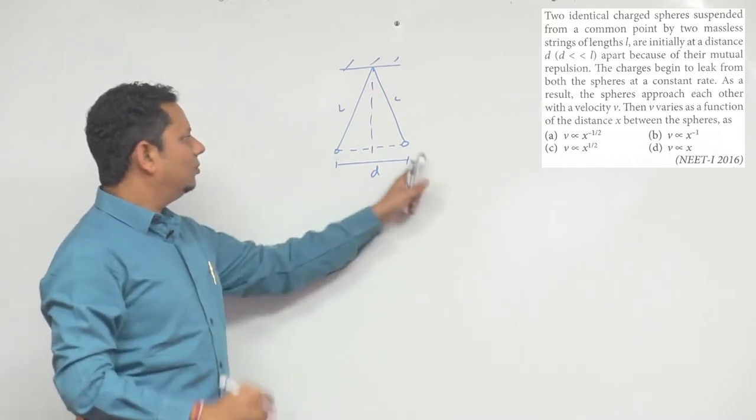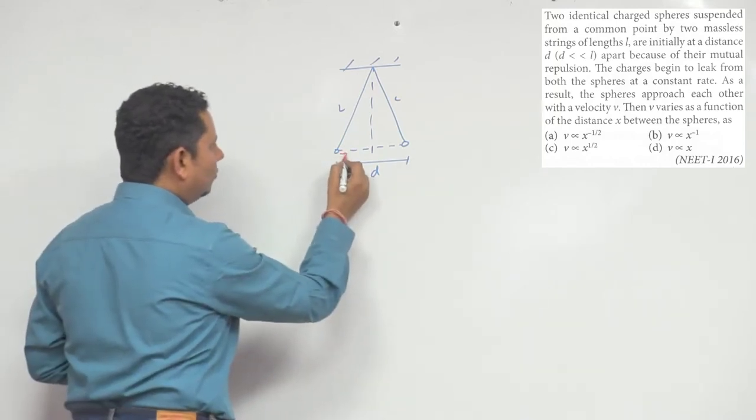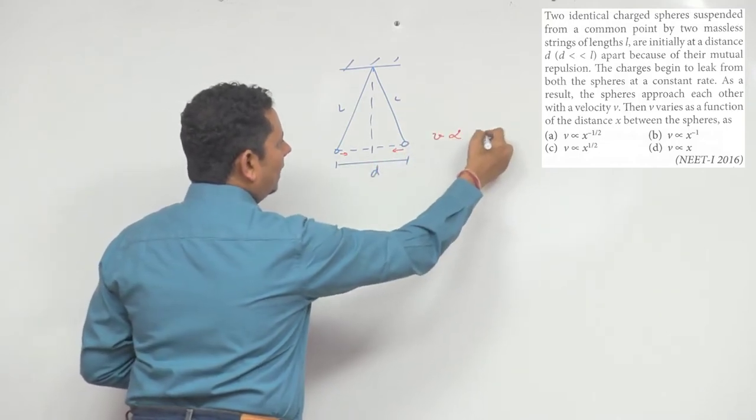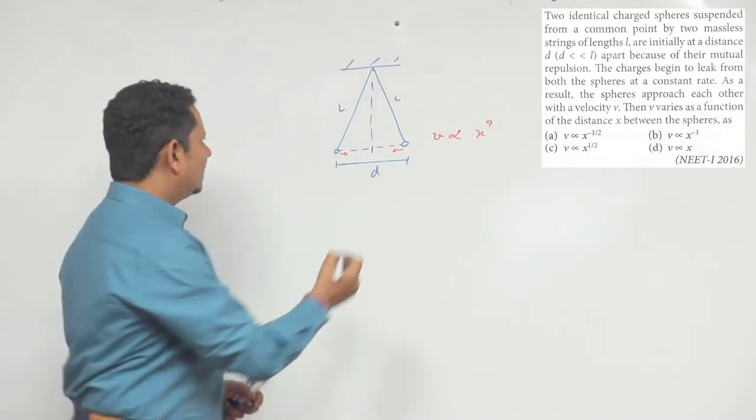Due to the leak, this charge will move here, this charge will move here, and their velocity of movement - we need to find out how it's proportional to the power of x. What's the relation between this velocity and x, and x is the distance between them.